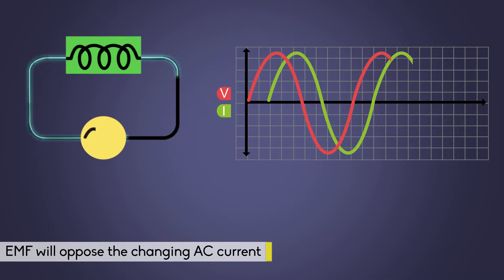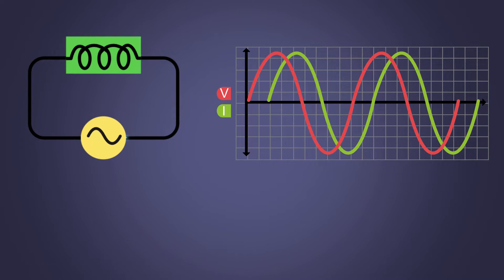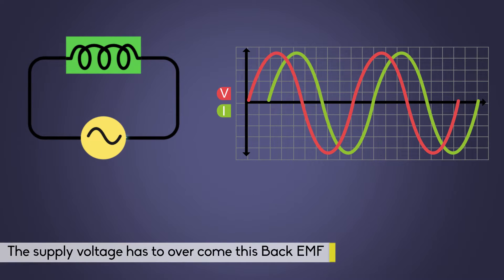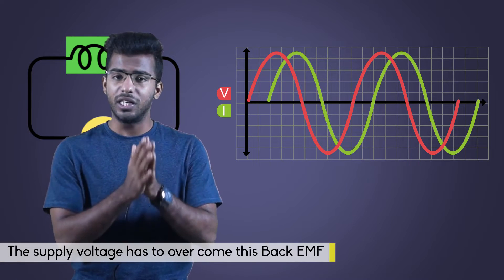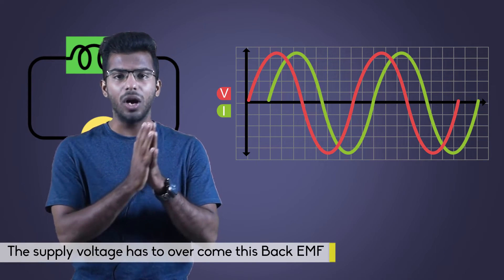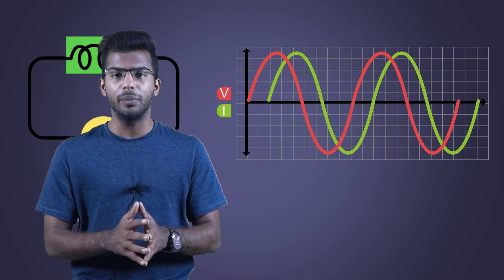As there is no resistance, there will be no voltage drop across the inductor. The supply voltage has to overcome this back EMF to flow in this circuit. If the device has an inductor, it will not start off and shut down immediately.